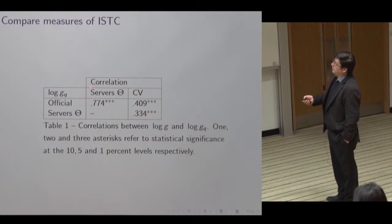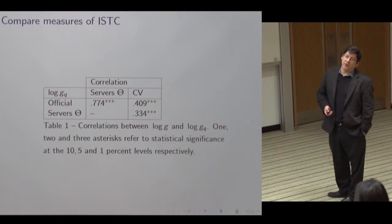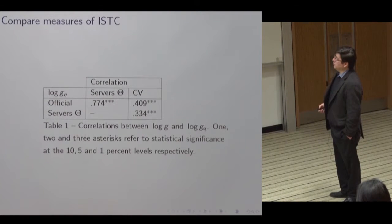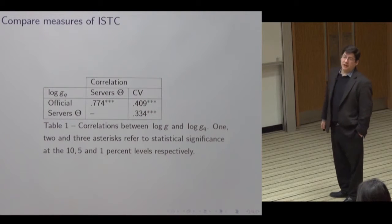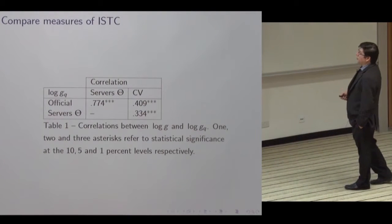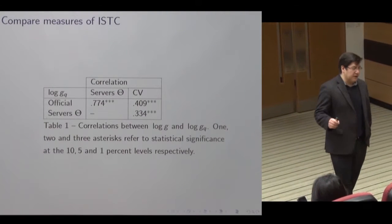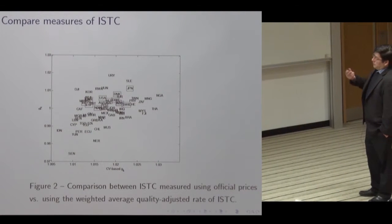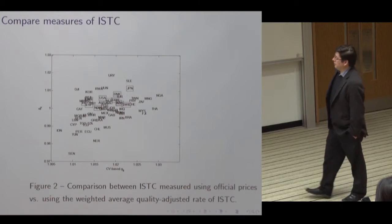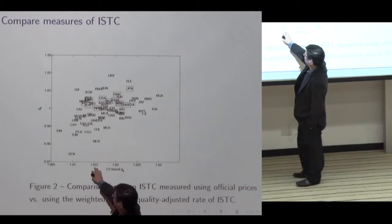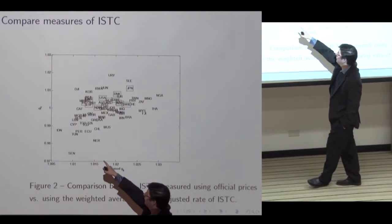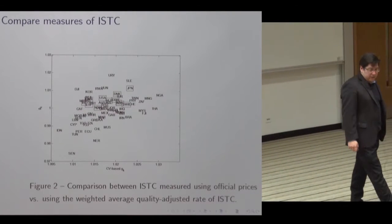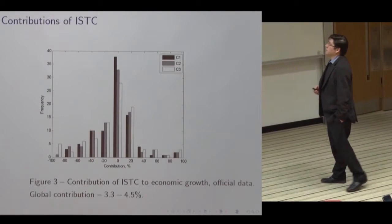We find that all three measures — the official one, the one adjusted using the density of secure servers as an IT indicator, and the one constructed using Cummins and Violante quality-adjusted specific capital good type measures weighted by import shares — are very highly correlated. That's telling us that even if we don't know the exact quality adjustments, the rankings are the same either way. The values are quite different though — by construction the import-based measure has none below one, while the official ones do. So we're not going to use it for the quantitative exercise; we'll just use it to help interpret things.